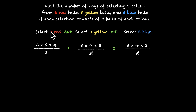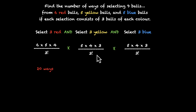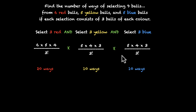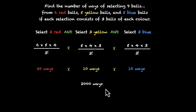Simplifying: three factorial is six — six cancels out — five times four is 20. So the number of ways to select three red balls out of six is 20 ways. For the yellow and blue: three cancels, and two cancels with four, leaving five times two, that's 10 ways — and 10 ways for the blue as well. So the total is 20 × 10 × 10 = 2000 ways. We have 2000 ways of doing this particular task.